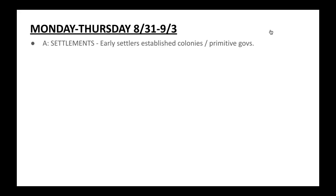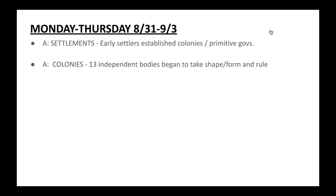However, over time these colonies began to bind together despite their differences in religion, culture, and basically everything else. The 13 independent colonies began to take shape and form as they established different means of rulership and different ways of governance. Some of these ways we can still find roots of today in our current system of government, and of course some practices have been done away with, and with good reason.